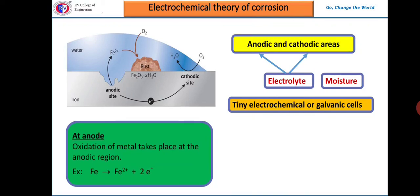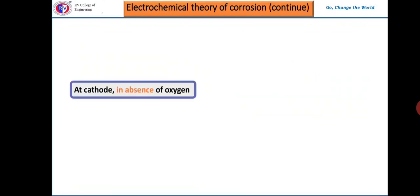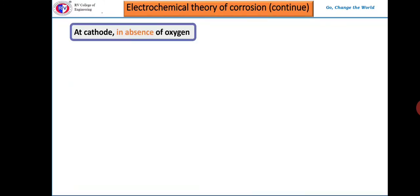Let us see the cathodic reactions. The metal at the cathodic area will not take up the electrons, it does not have the tendency. Therefore, if at all electrons are consumed, it must be some species in the environment. Species may be oxygen or it may be neutral or any other medium.